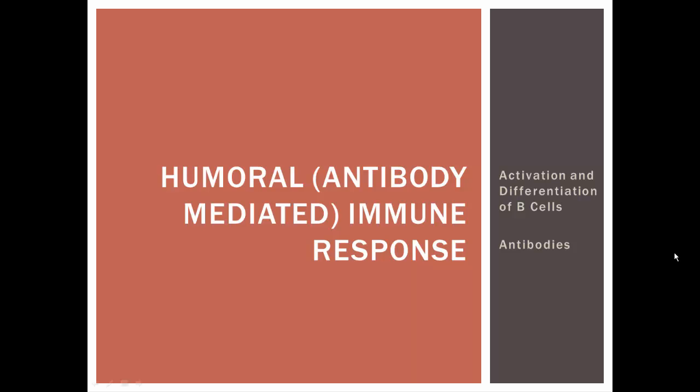Now we're ready to look at humoral and antibody-mediated immune response. This is just one of the two branches of the adaptive immune system. We'll look at cell-mediated immunity in the next video. So here we're talking about B cells and antibodies. We're going to look at the activation and differentiation of B cells, and we'll also look at antibody functions.